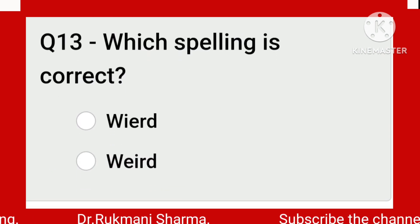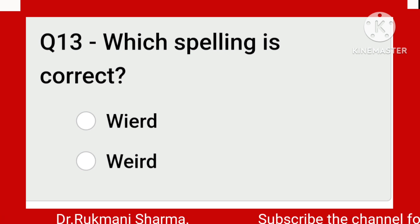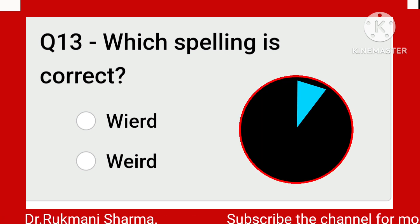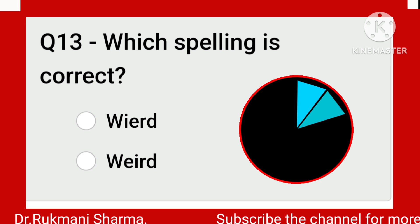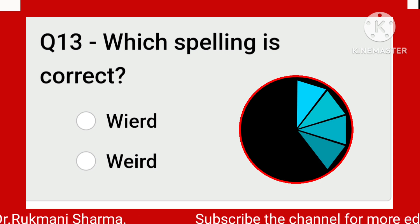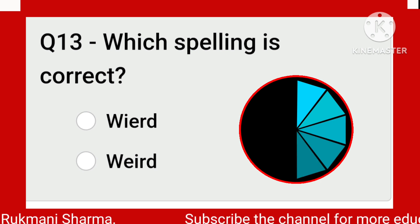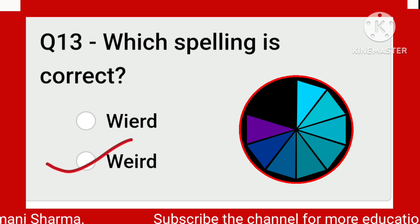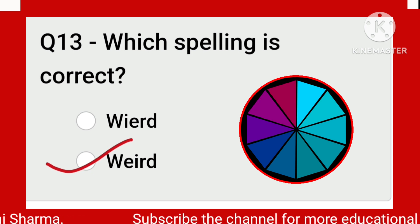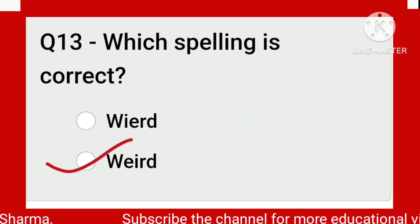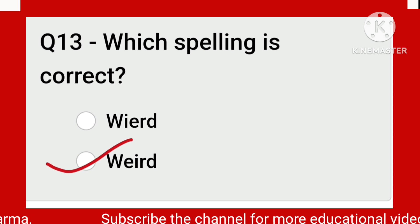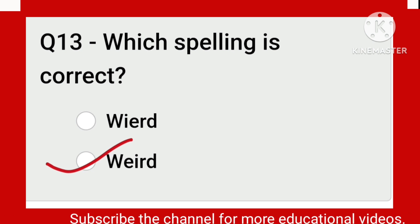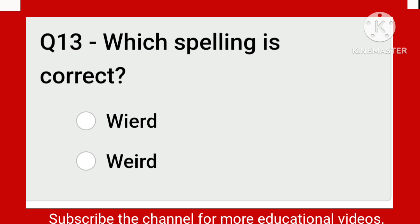Which spelling is correct? Weird — it is a very commonly used word. This is the correct spelling: W-E-I-R-D. Weird — that strange feeling, weird behavior.